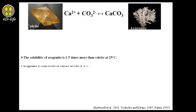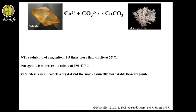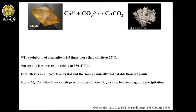Aragonite converts to calcite at 318 to 470 degrees centigrade. Calcite is a clear, colorless crystal and thermodynamically more stable than aragonite at higher temperature and pressure. Both of them have very similar crystal structure. Depending on the concentration of magnesium ions in the solution, the regulation of aragonite and calcite polymorphism is formed.